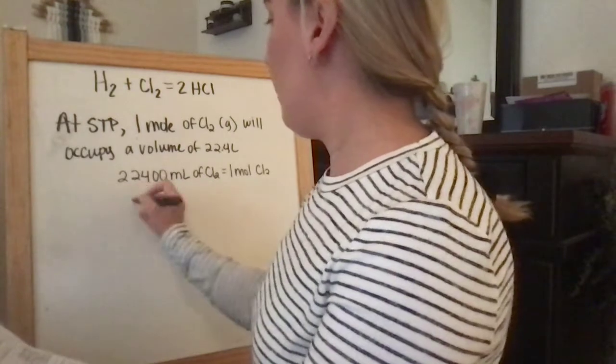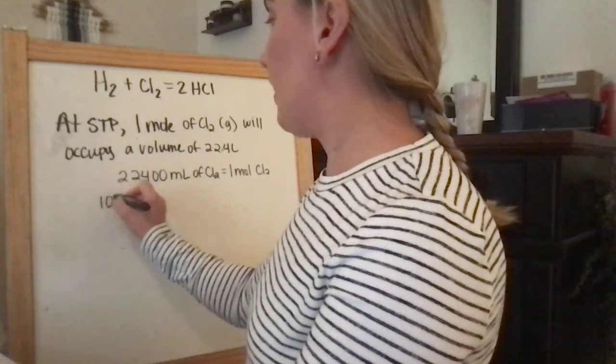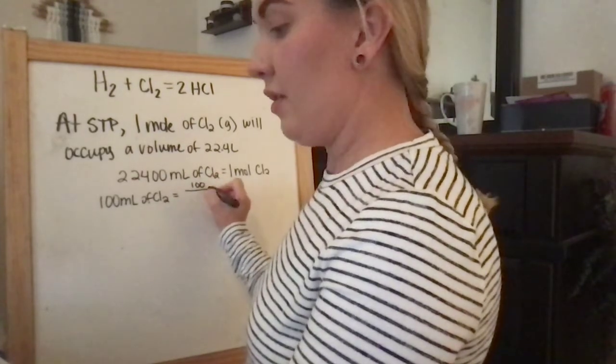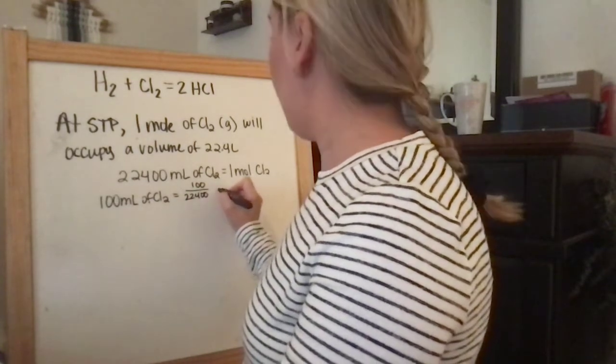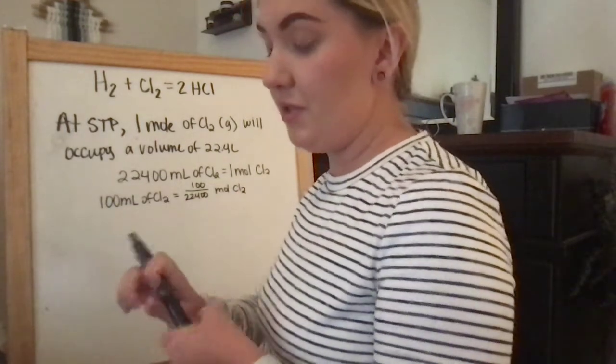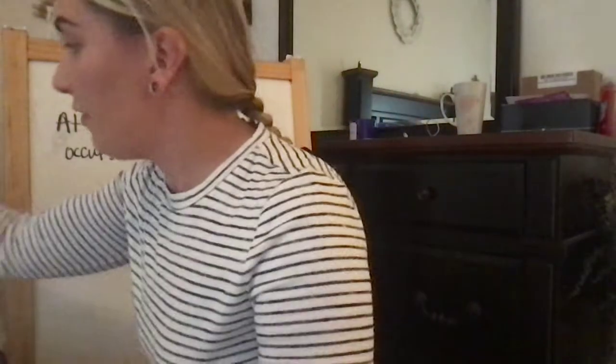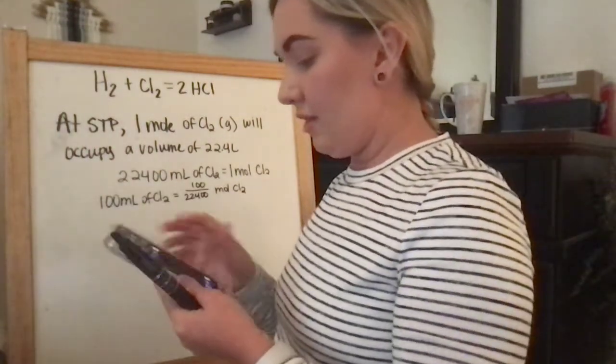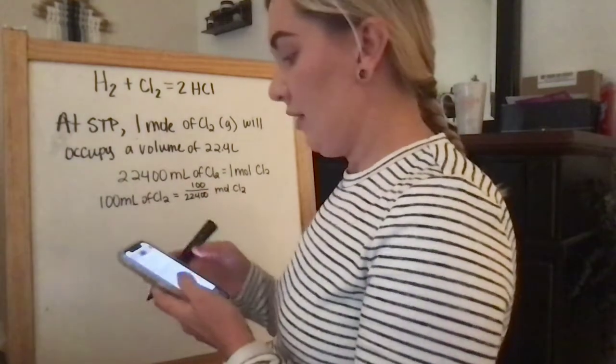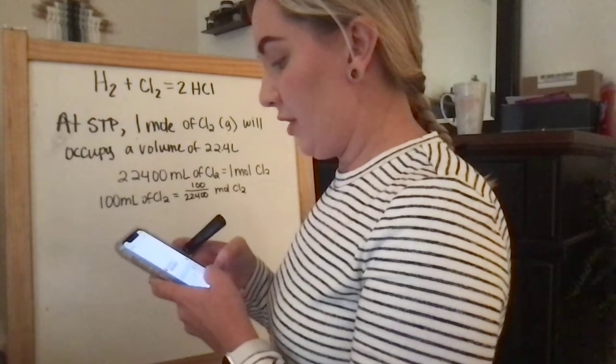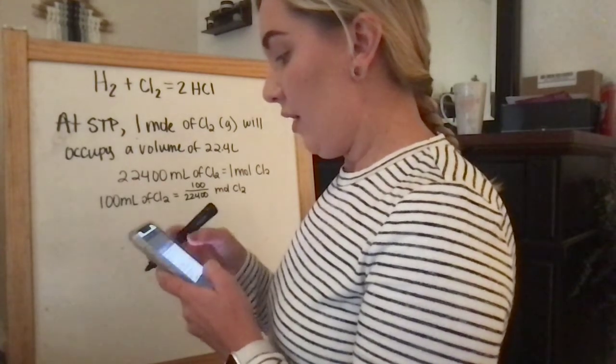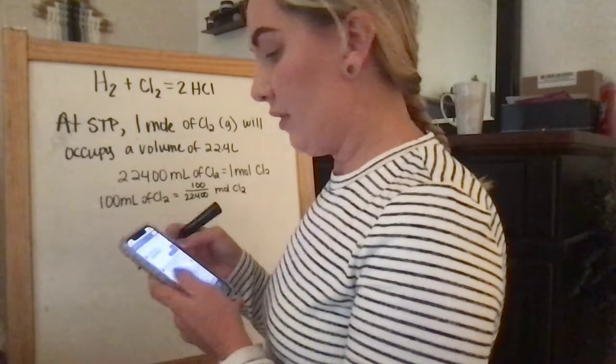So if this equals one mole, 100 mLs of Cl2 would equal, we're just converting this down to how many moles of Cl2 is used. So after we do this conversion math problem, we're going to divide 100 divided by 22,400.